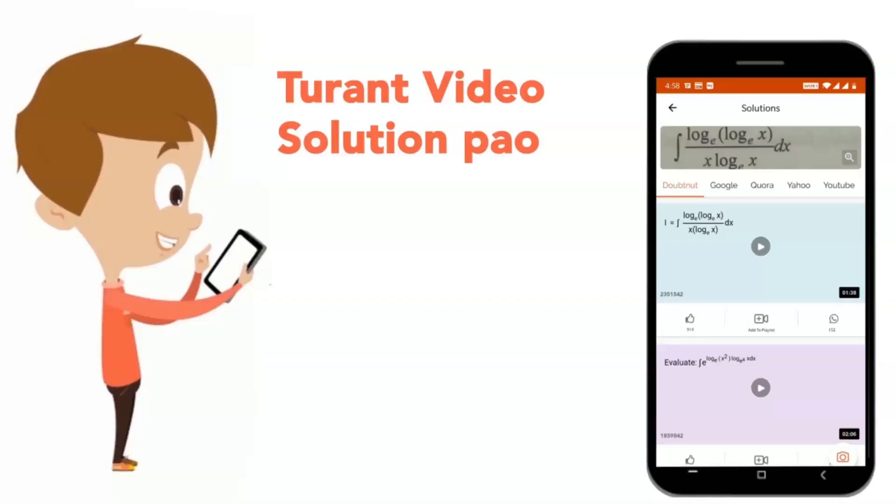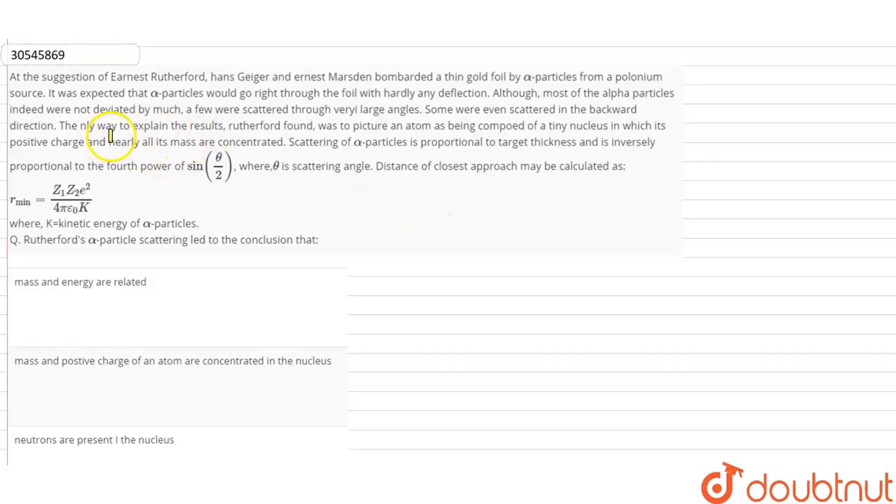There is a comprehension in this question, which states that at the suggestion of Ernest Rutherford, Hans Geiger and Ernest Marsden bombarded a thin gold foil with alpha particles from a polonium source. It was expected that alpha particles would go right through the foil with hardly any deflection.